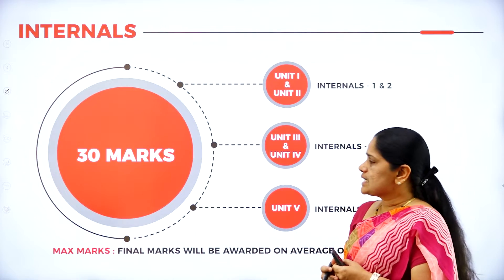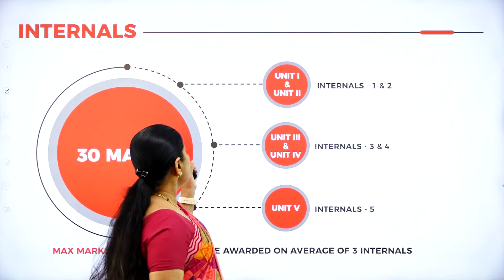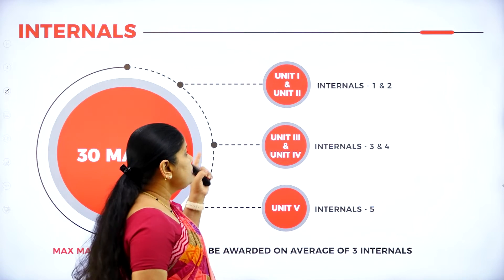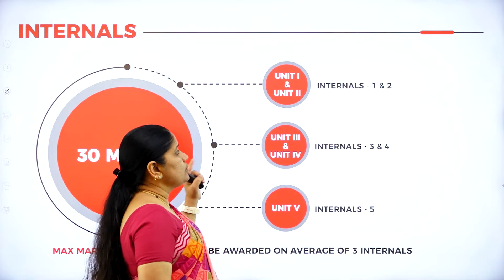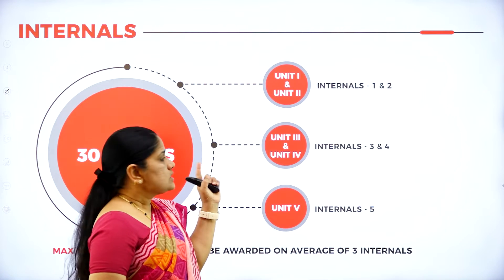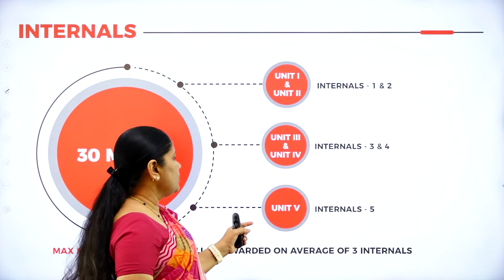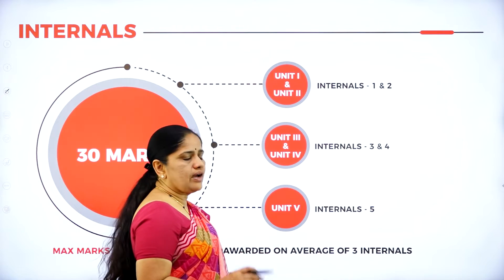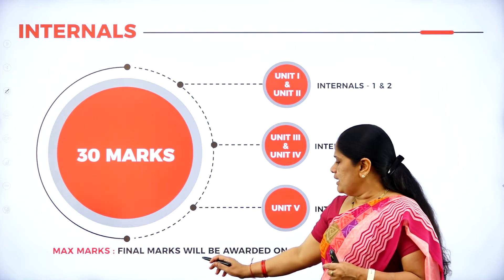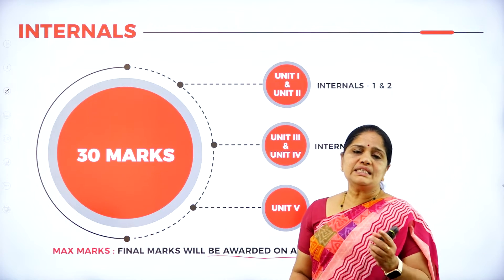Let us look into the marks for the internals. Internals will be for 30 marks — units 1 and 2 for the first internal, units 3 and 4 for the second internal, and unit 5 only for the third internal. The final marks will be awarded on the average of the three internals, so whatever internal marks the student scores will be based on that average.